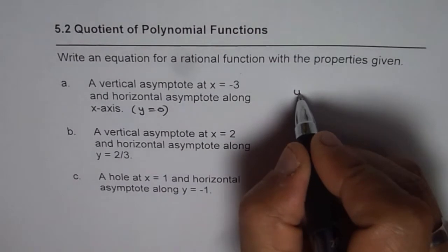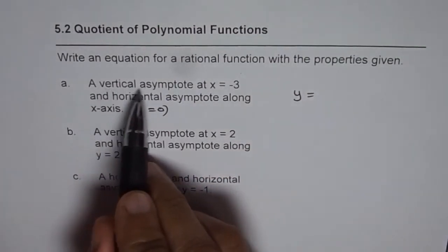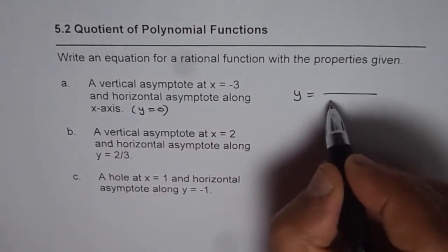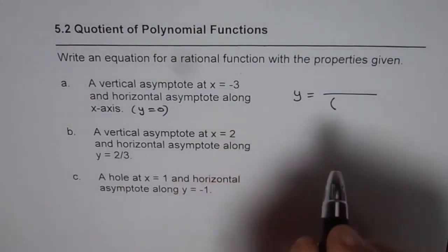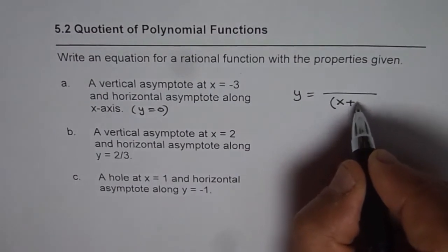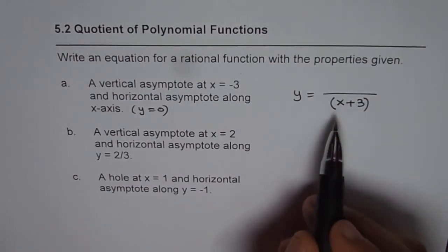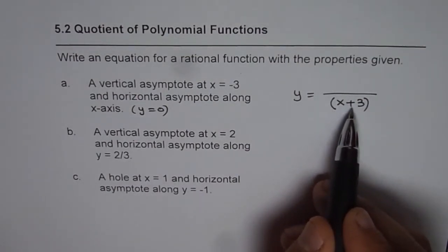So we can write the equation as vertical asymptote at x equals minus 3. That means denominator should be 0 for x equals minus 3. So I should have x plus 3 in the denominator. If I substitute minus 3, denominator will be 0. This will give me a vertical asymptote.